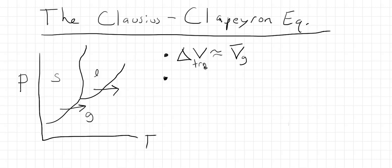Notice that the molar volume of gas will be much bigger than the others. That won't be true if we're up here near the critical point, so we can't use this up here. We can't use the Clausius-Clapeyron equation near the critical point.